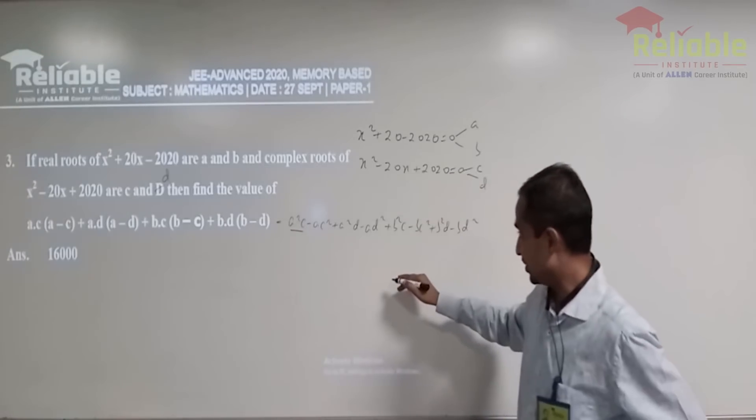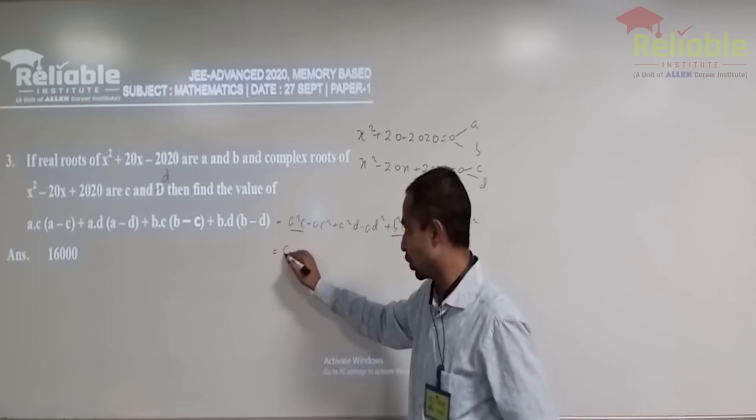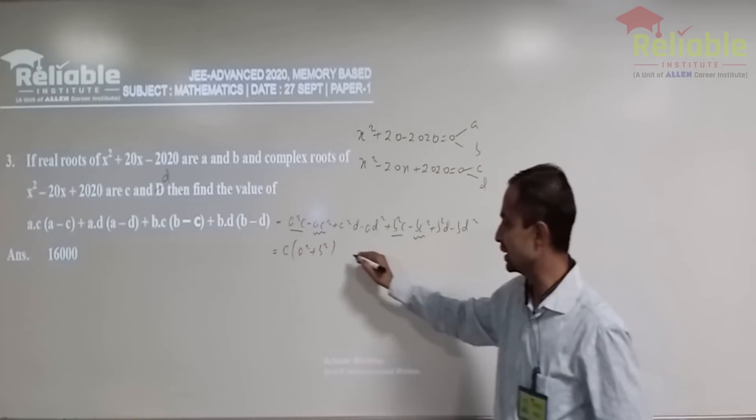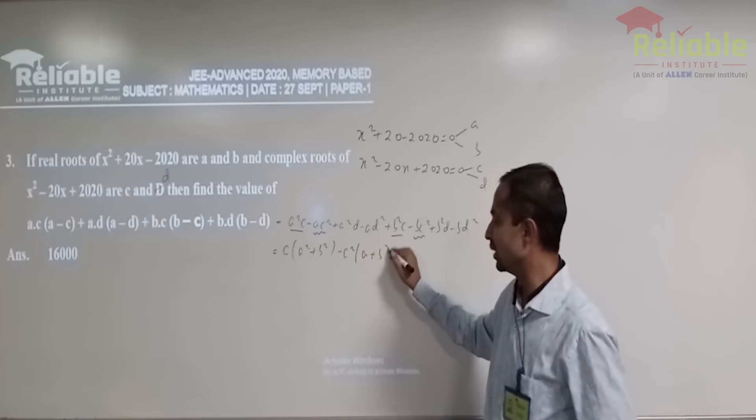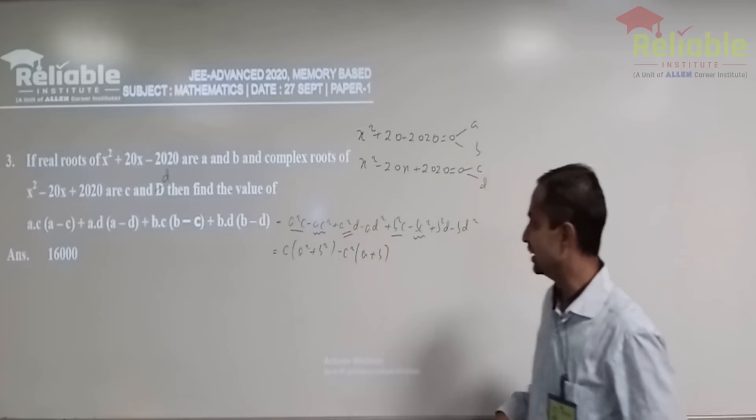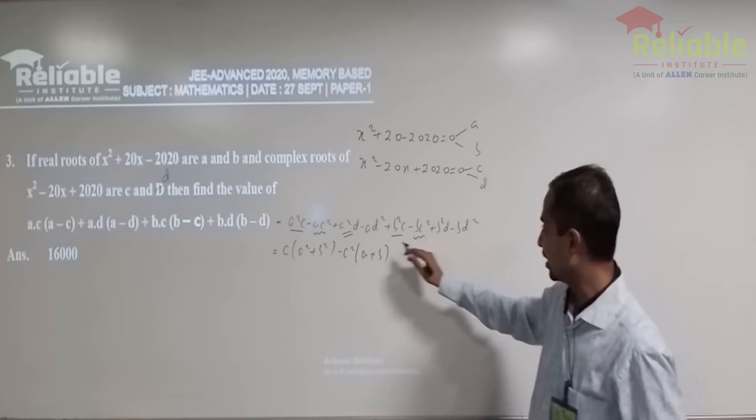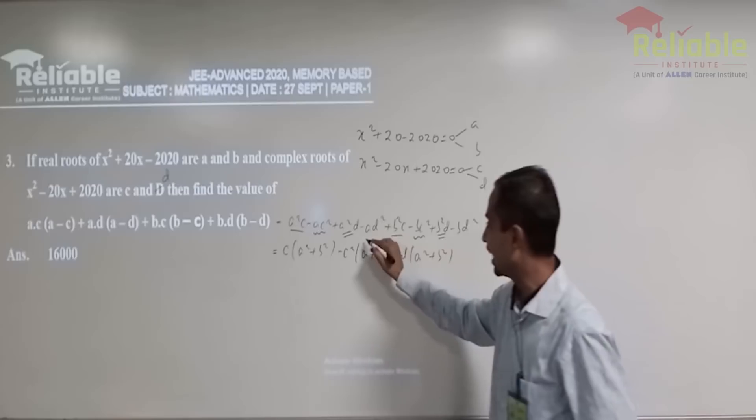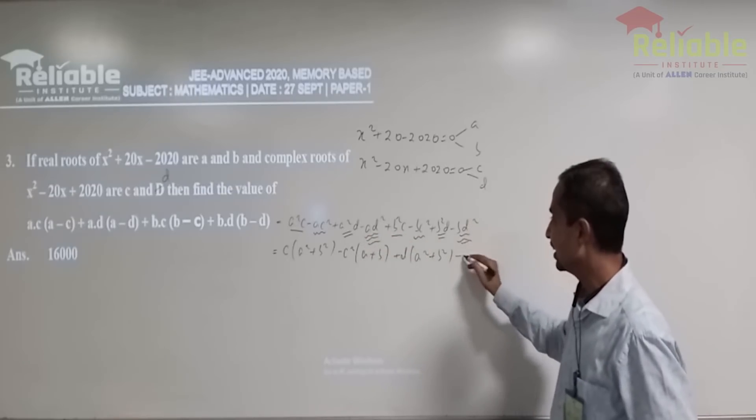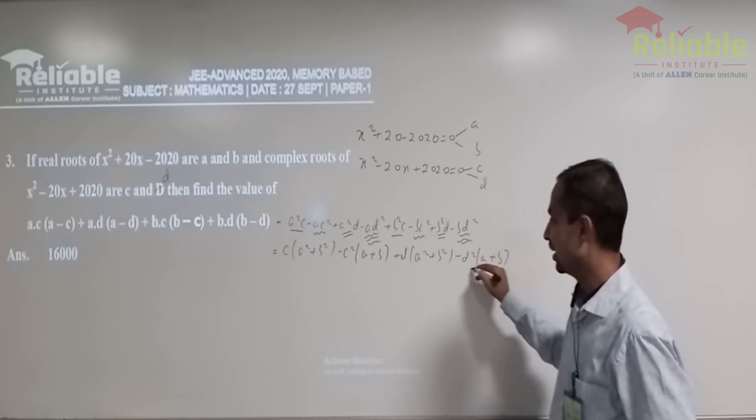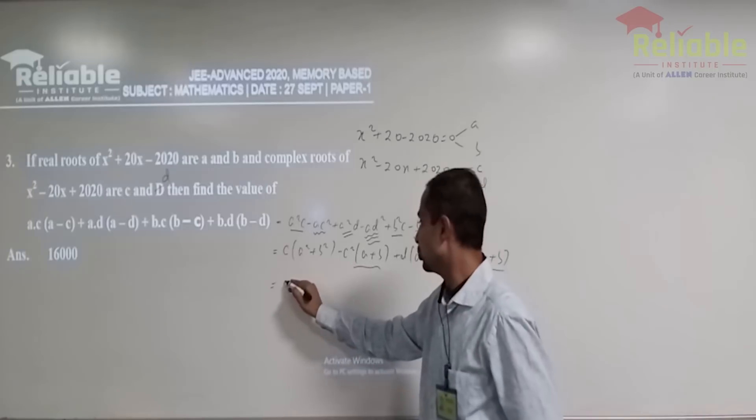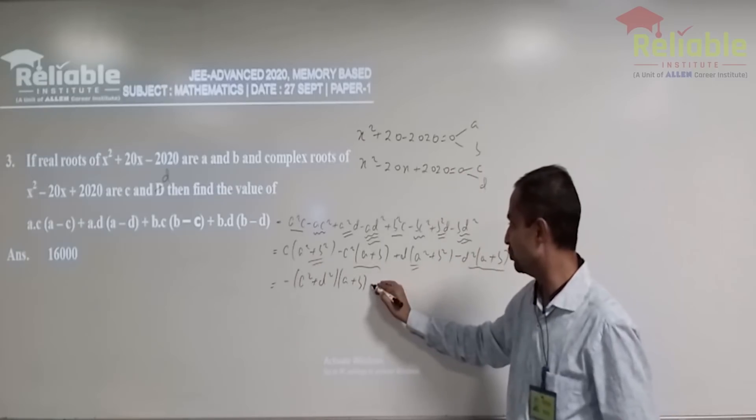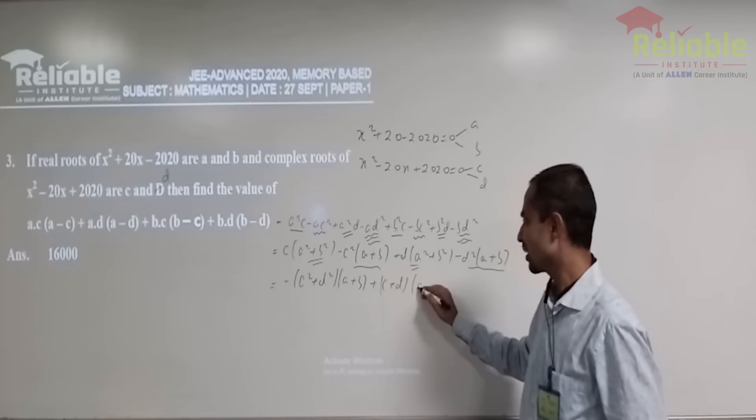So here A square C and B square C, C comes common and you get A square plus B square. If you were to look at these two expressions, C square gets common and you get A plus B. If you were to look at this expression, D comes common from A square D and B square D and you get A square plus B square. And this is the third leftover thing in which D square comes common and A plus B. Hence, if you were to club these two, you're going to get C square plus B square, A plus B. And by clubbing these two, we get C plus D into A square plus B square.